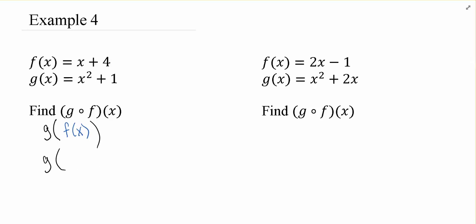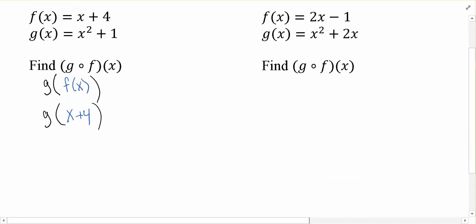So f of x in this case is x plus 4. And in this case, the g function is saying, whatever you're plugging in, square it, and then add 1 to it. That's what the g function is telling you to do.